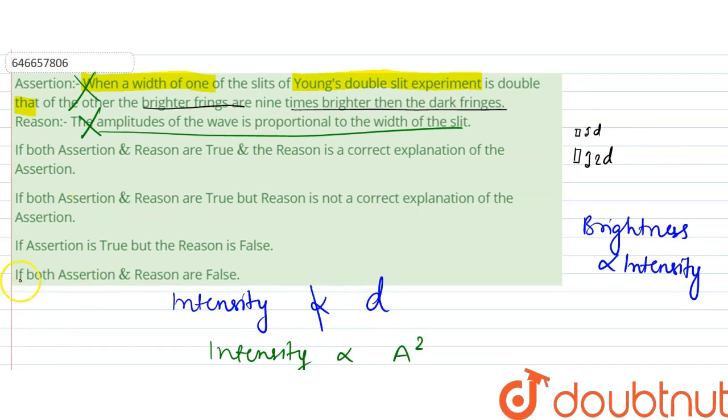So if both assertion and reason are false, that is option D is the correct answer. Thank you.